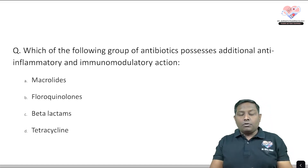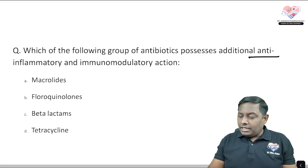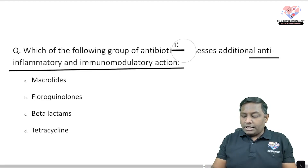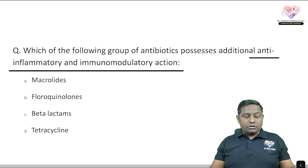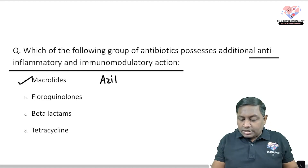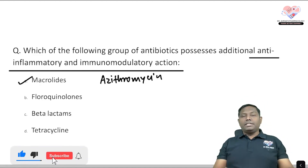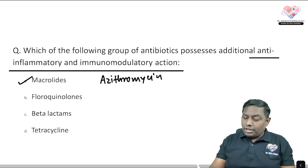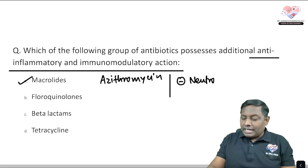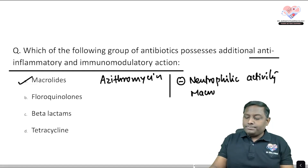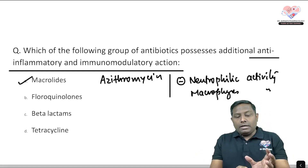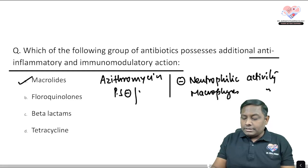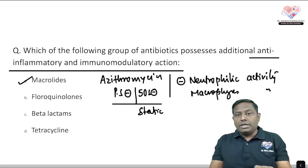The next question: which group of antibiotics possesses additional anti-inflammatory and immunomodulatory properties? This has been reported with macrolides — drugs like azithromycin and erythromycin. They promote immunomodulatory properties by accumulating in neutrophils and inhibiting neutrophilic activity, as well as macrophage activity. Azithromycin is a protein synthesis inhibitor acting on the 50S ribosomal subunit with bacteriostatic property, and in addition to antimicrobial action, it also has immunomodulatory and anti-inflammatory properties.